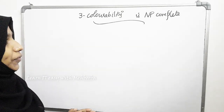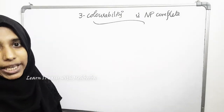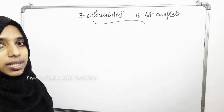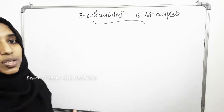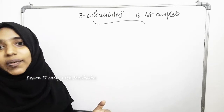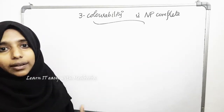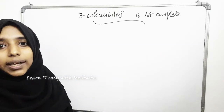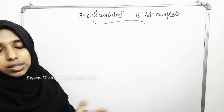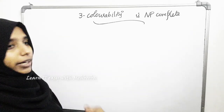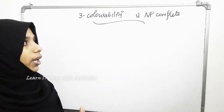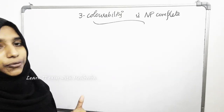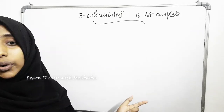In this video we will prove that 3-colorability is NP complete. 3-colorability basically means that a graph can be colored with at most 3 colors. In general we say K-colorability, meaning the graph can be colored with K colors. So 3-colorability means a graph can be colored with 3 different colors such that adjacent vertices do not have the same color. That is the concept of graph coloring, used for register allocation and similar applications.